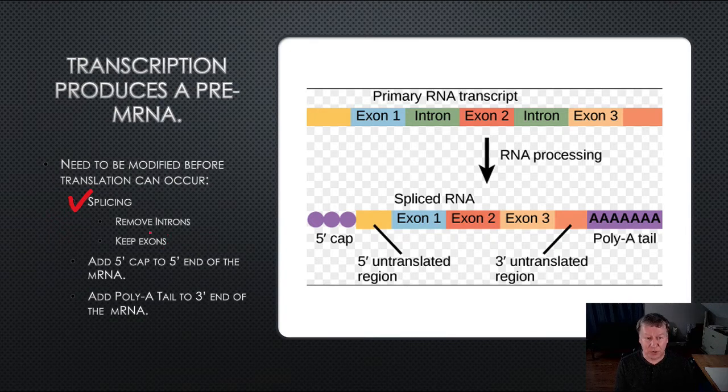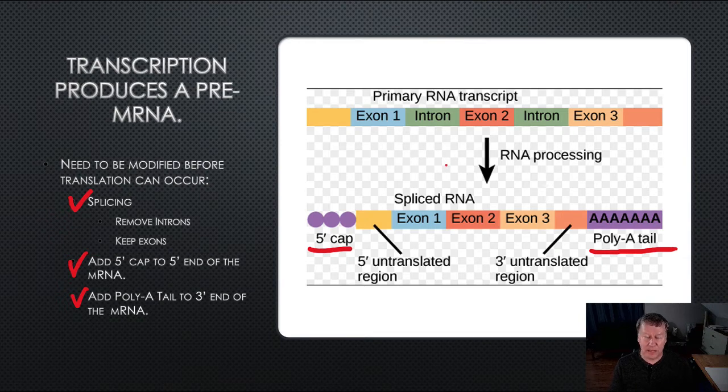The two other things we need to do: we need to add a five-prime cap to the five-prime end of the mRNA molecule. You can see that here. And we need to add a poly-A tail to the three-prime end, a whole bunch of adenines. Once these three modifications are complete, the pre-mRNA becomes mRNA and we're able to send it out for translation.